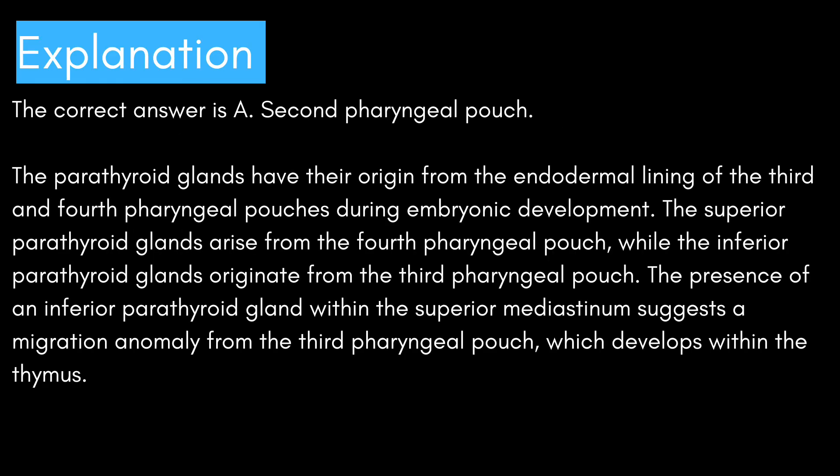The correct answer is A, third pharyngeal pouch. The parathyroid glands have their origin from the endodermal lining of the third and fourth pharyngeal pouches during embryonic development. The superior parathyroid glands arise from the fourth pharyngeal pouch, while the inferior parathyroid glands originate from the third pharyngeal pouch. The presence of an inferior parathyroid gland within the superior mediastinum suggests a migration anomaly from the third pharyngeal pouch, which develops within the thymus.